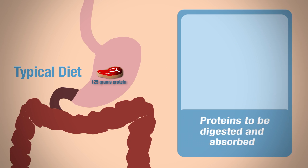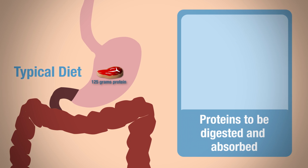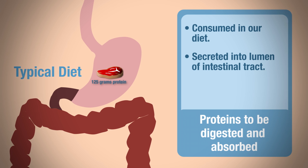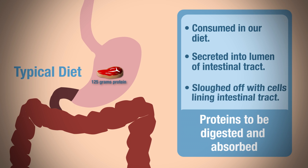The proteins we are going to digest and absorb include those consumed in our diet, those proteins that get secreted into the lumen of the intestinal tract such as some enzymes — enzymes that get secreted into the lumen and then broken down — and those proteins that are sloughed off with cells, specifically enterocytes, that line the intestinal tract into the lumen of the GI tract.